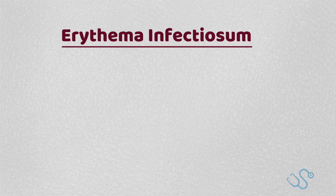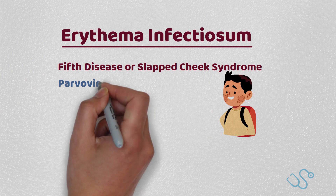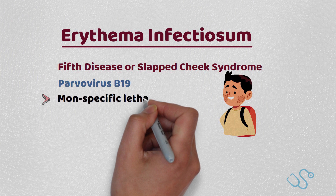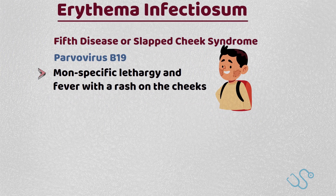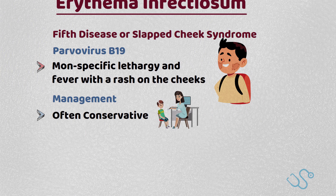Erythema infectiosum, known as fifth disease or slap cheek syndrome, is commonly caused by parvovirus B19. It presents with non-specific lethargy, fever and a rash predominantly on the cheeks before moving to the arms. Children often have an asymptomatic recurrence of the rash months later, usually triggered by sunlight or heat. Management is often conservative with no school exclusion necessary once the rash has appeared, given it is not infective in the presence of the rash.